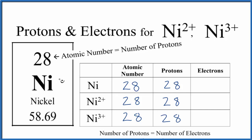So if you look at nickel here, there's no negative or positive. That means it's a neutral element. So for neutral nickel, 28 protons, 28 electrons.